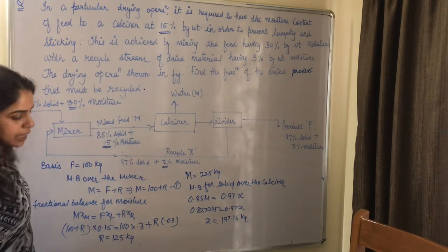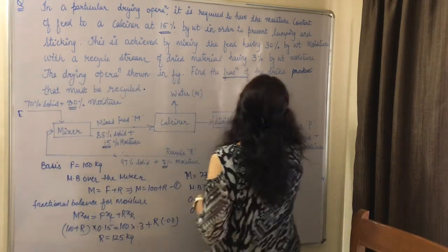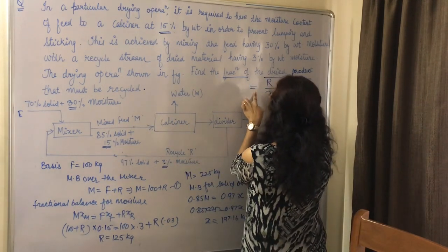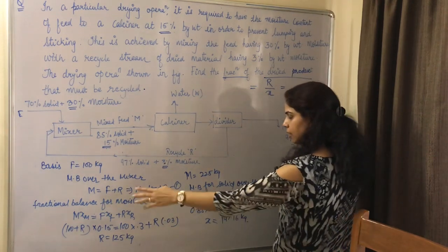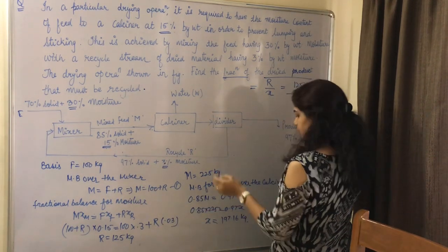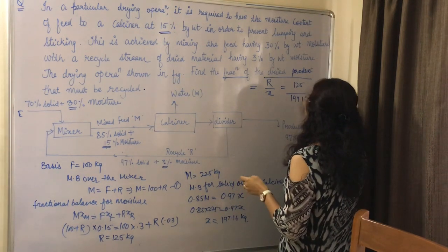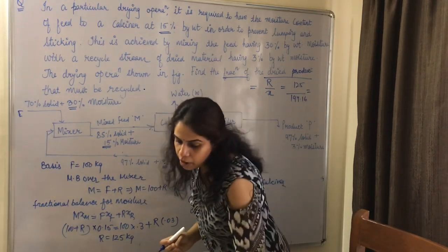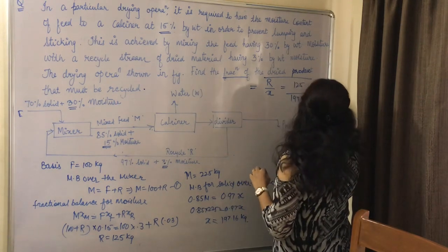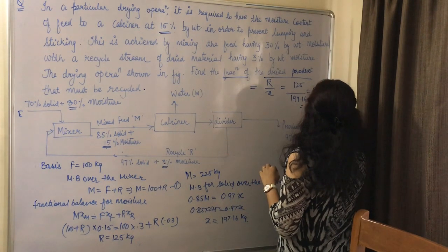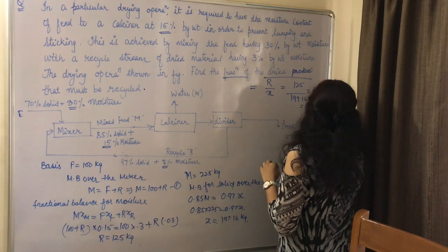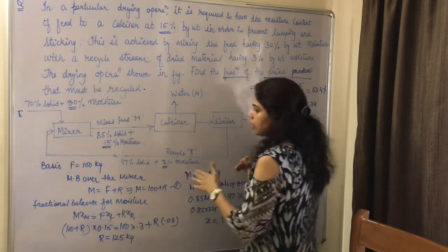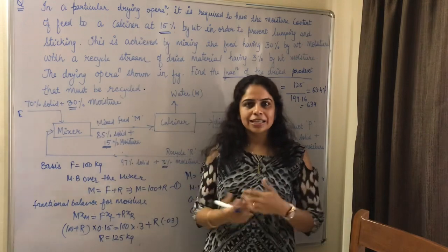Now we find the fraction of dried product that must be recycled. The recycle fraction is R divided by X: 125 divided by 197.16, which gives 0.634, or 63.4%. So 63.4% of the dried product must be recycled in the recycle stream. Hope you understand this question, thank you.